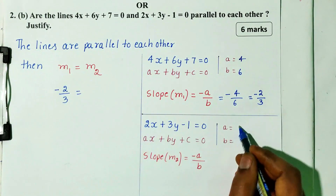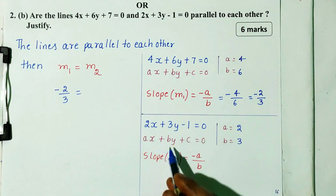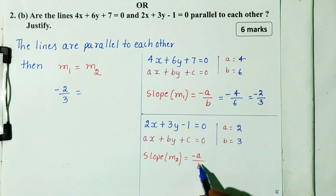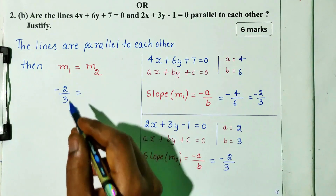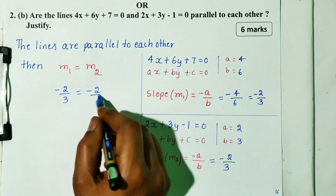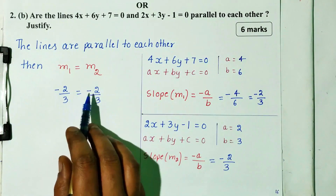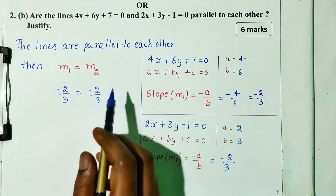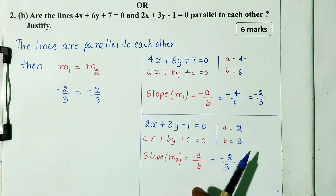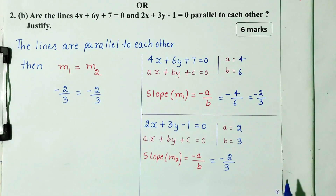For the second line, a is equal to 2 and b is equal to 3. So m2 is equal to minus 2 divided by 3. Since m1 equals m2 equals minus 2 divided by 3, the lines are parallel to each other. Six marks are covered with this answer.